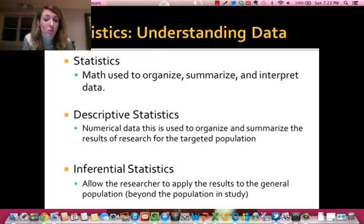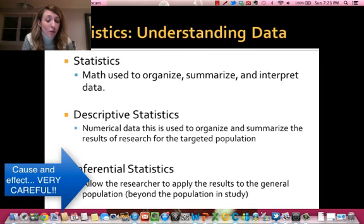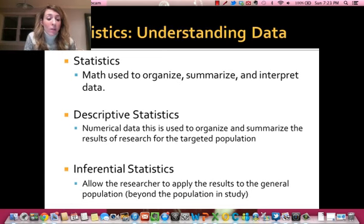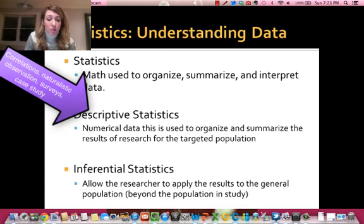Inferential statistics allow the researcher to apply the results to the general population. So it allows you to infer things about people as a whole. For example, if I did a study about kids at Mundelein High School, I could maybe apply that to all high school students. We do this very carefully. Inferential statistics, very carefully. And it's only ever used if you do an experiment. Cause and effect. Descriptive statistics are used for correlations, surveys, naturalistic observations, all of those things.